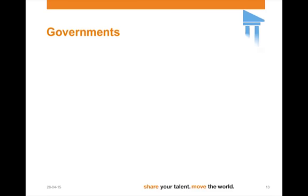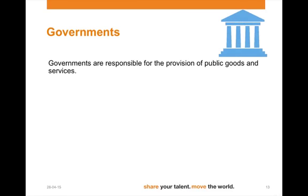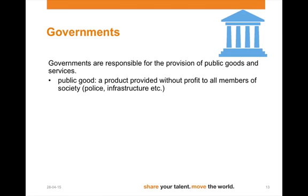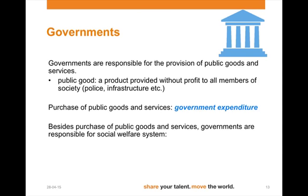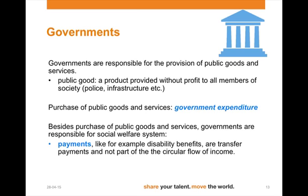Let's have a look at the role of governments. Governments are responsible for the provision of public goods and services. Public goods are products provided without profit to all members of society — here you can think of police and infrastructure. The purchase of public goods and services is what we call government expenditure. The government is acting as a buyer on the market, but uses private firms to actually do the job. Besides the purchase of public goods and services, governments are responsible for a social welfare system.